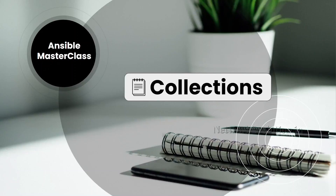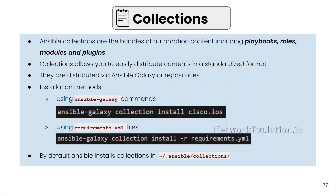In this tutorial, we will see what Ansible collections are and how to install collections manually. Ansible collections are bundles of automation content including playbooks, roles, modules, and plugins. One example of a collection is Cisco IOS, which mainly contains modules for configuring Cisco IOS devices.